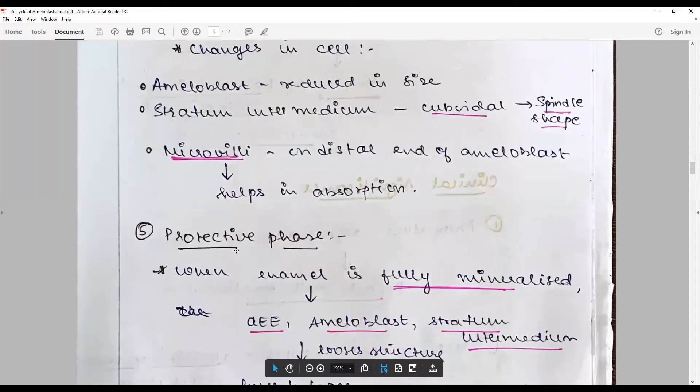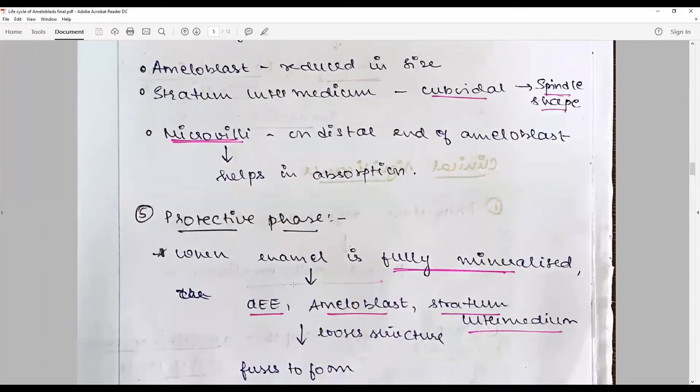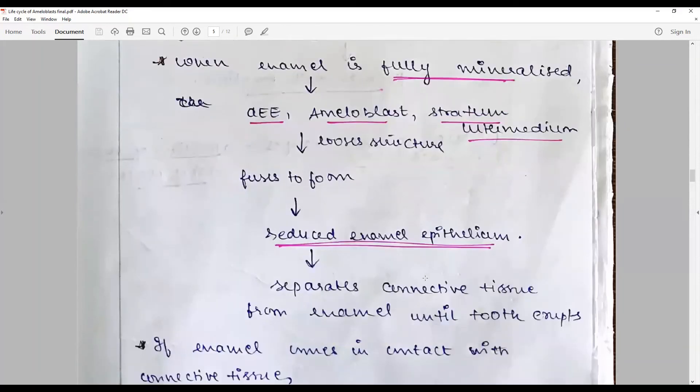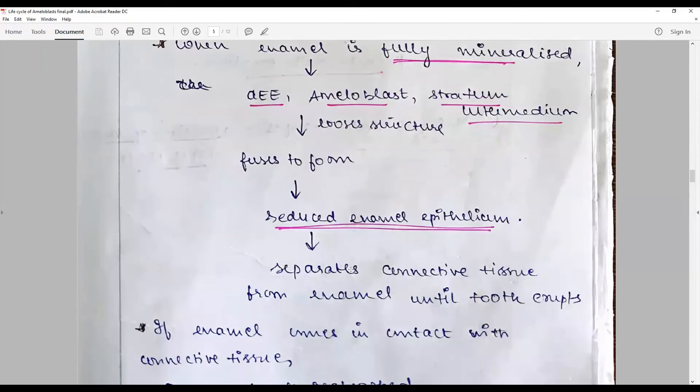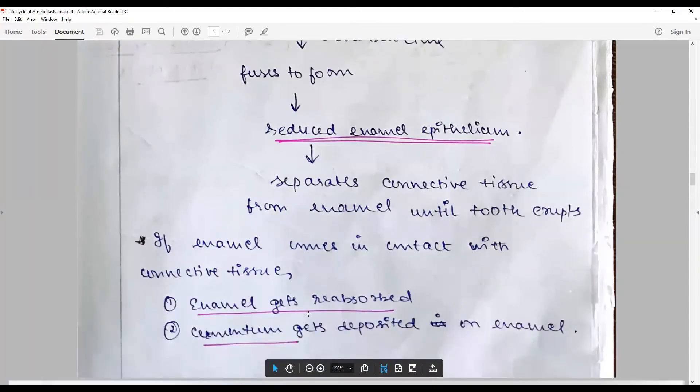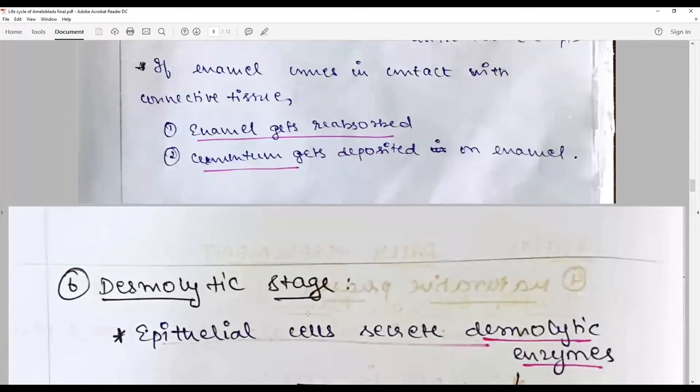Protective phase: when the enamel is completely mineralized, the post-functional ameloblast becomes more like inner enamel epithelium. Along with the collapsed stratum intermedium, they lose their structure. So the outer enamel epithelium and the post-functional ameloblast come together or fuse to form what we call reduced enamel epithelium. That elongates and separates from the connective tissue, from this adjoining dental sac, from the enamel. If there is any abnormality, the newly formed enamel in the bony crypt comes into contact with the dental sac, and that may cause the enamel to get resolved or formation of new cementum if the cell signals are very active.